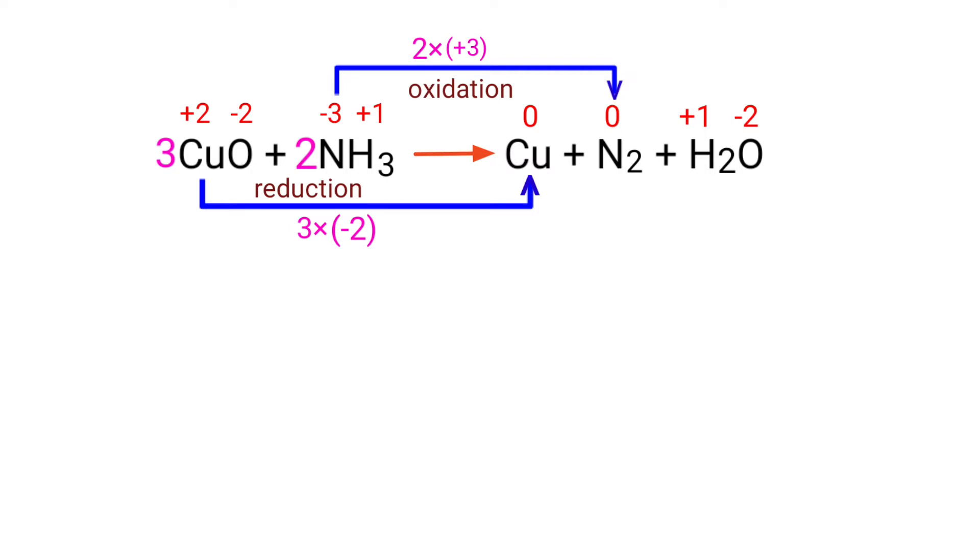Now you can write the equation as 3CuO plus 2NH3 gives us Cu plus N2 plus H2O. Now you can balance the number of atoms in this equation.